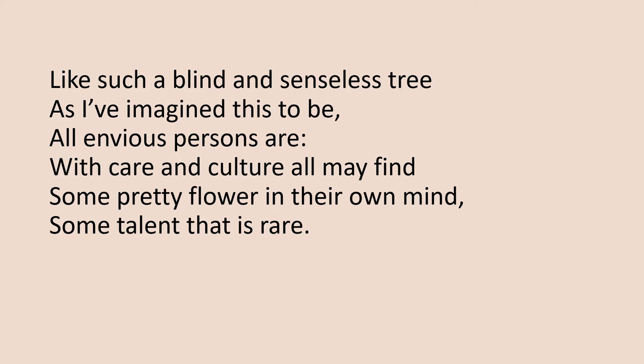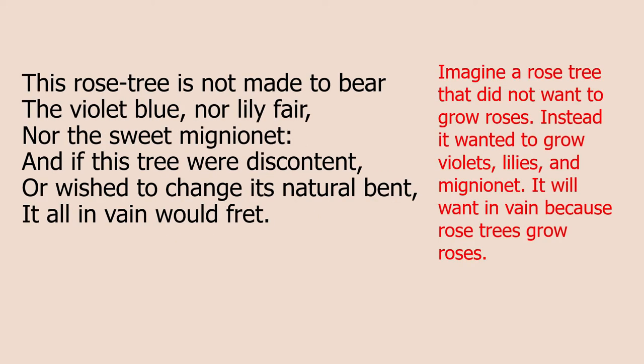So what is going on? What is Lamb trying to teach us in this poem? In stanza one, Lamb is asking the reader to imagine a rose tree that no longer wants to grow roses. Instead, this rose tree wants to grow violets, which is a purple flower, lilies, which give off a really nice scent, and mignionet, which is a sweet type of grass. This rose tree wants to grow other flowers, but it will want in vain, because naturally, rose trees grow roses. So it's pointless for this rose tree to want to grow other types of flowers.